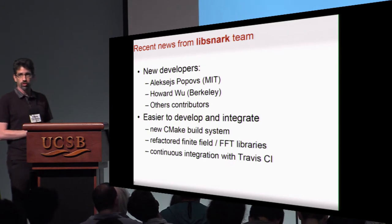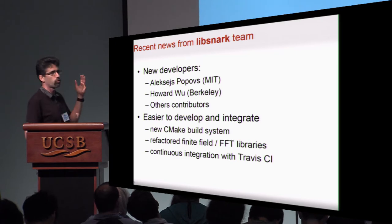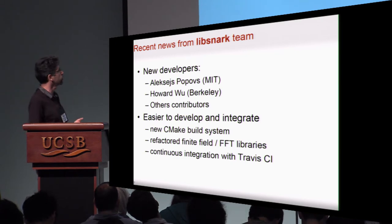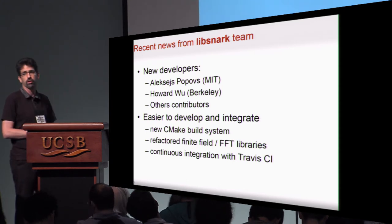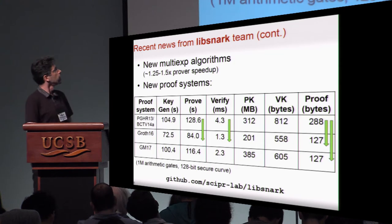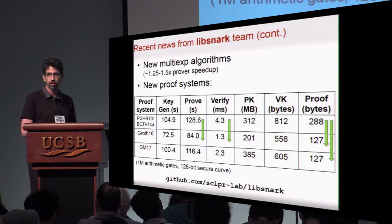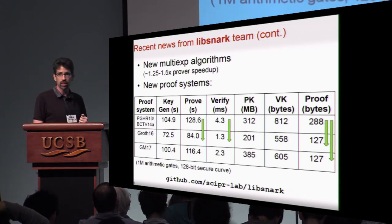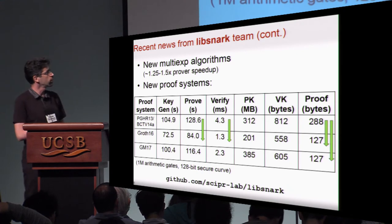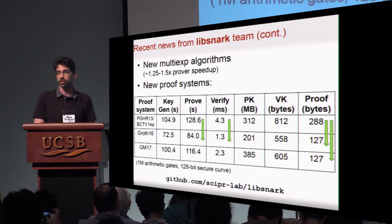We've been fortunate to have several developers join us recently, and they contributed some very nice things to the library, including a new build system and other improvements that make development and integration easier. Improvements to the prover performance algorithm using both low-level and high-level techniques, implementing the latest and greatest ZK-SNARK schemes, resulting in reduced proof sizes, prover complexity, as well as verifier complexity. All of these are available on our GitHub repo.